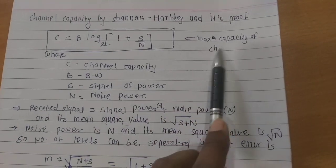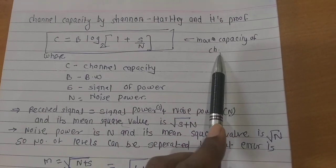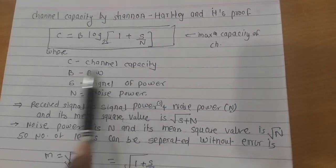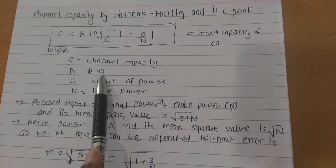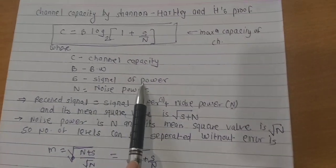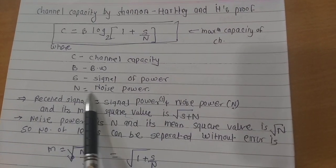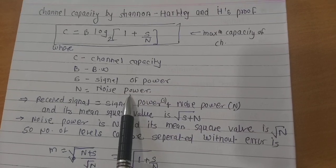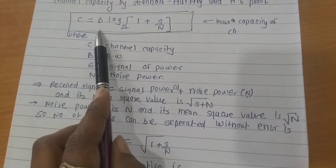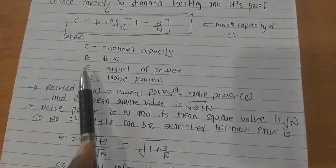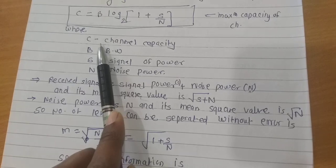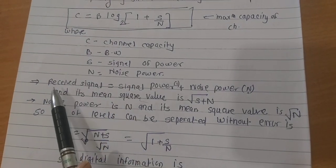This is the maximum channel capacity, where C is the channel capacity, B is the bandwidth, S is the signal power, and N is the noise power. This formula is very important for the calculation of channel capacity.